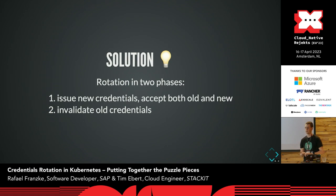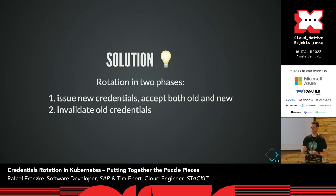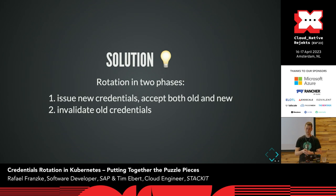For this challenge, we came up with a two-phase approach for rotating static credentials in Kubernetes clusters. In the first phase, we issue new credentials but keep accepting both old and new credentials. In the second phase, we invalidate the old ones and all old credentials are gone. Clients need to comply with this process — otherwise it will be a disruption. They need to refresh their credentials after triggering the first phase, and once ready, they can trigger the second phase and invalidate the old credentials.